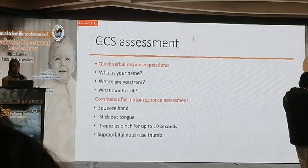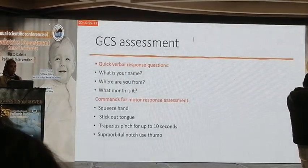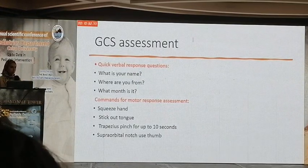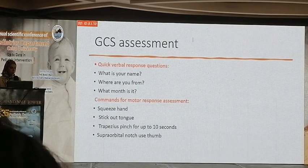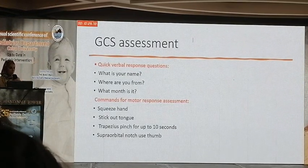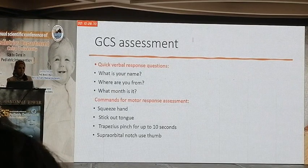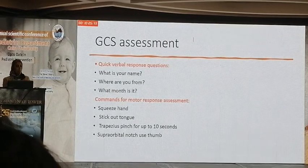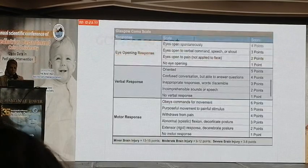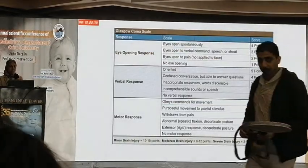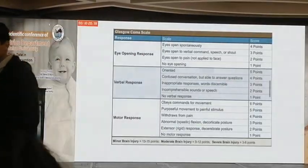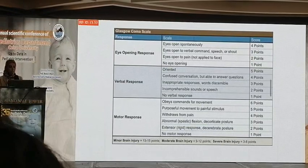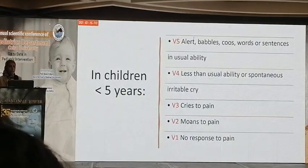Glasgow Coma Score assessment can be done by quick verbal response questions. Commands for motor response assessment such as squeeze hands, stick out tongue, and hold for up to 10 seconds. This is the Glasgow Coma Score with assessment of eye-opening response, verbal response, and motor response.